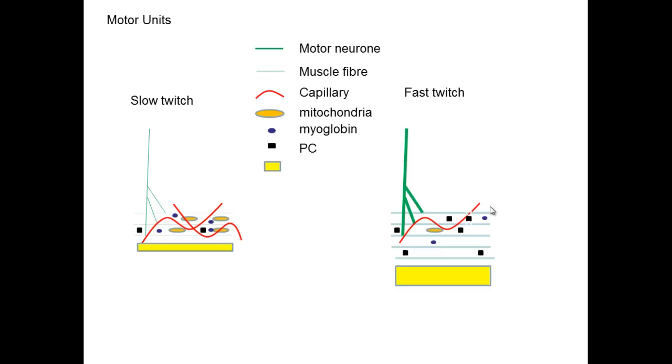Phosphocreatine stores are involved in anaerobic respiration, which is much more to do with the fast twitch fibers. There's a greater amount within fast twitch because they do more anaerobic respiration.